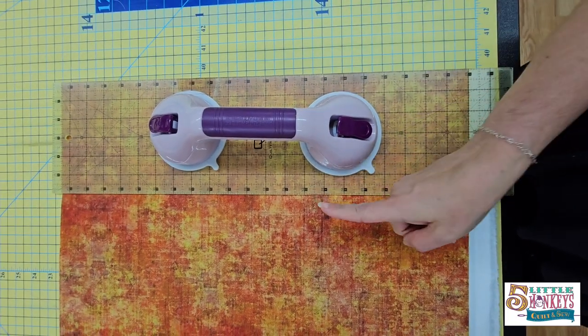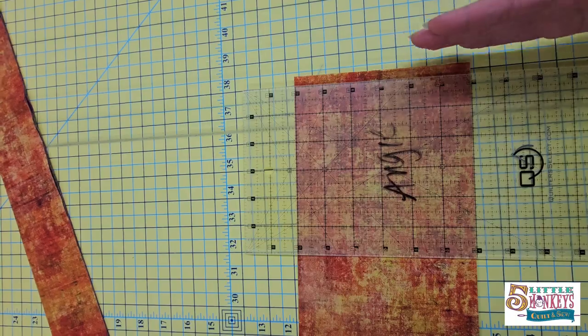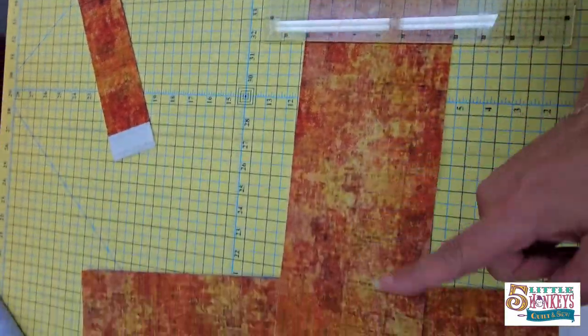Then I'm going to cut one six-inch strip. I clean up the side. We're going to cut this three times.